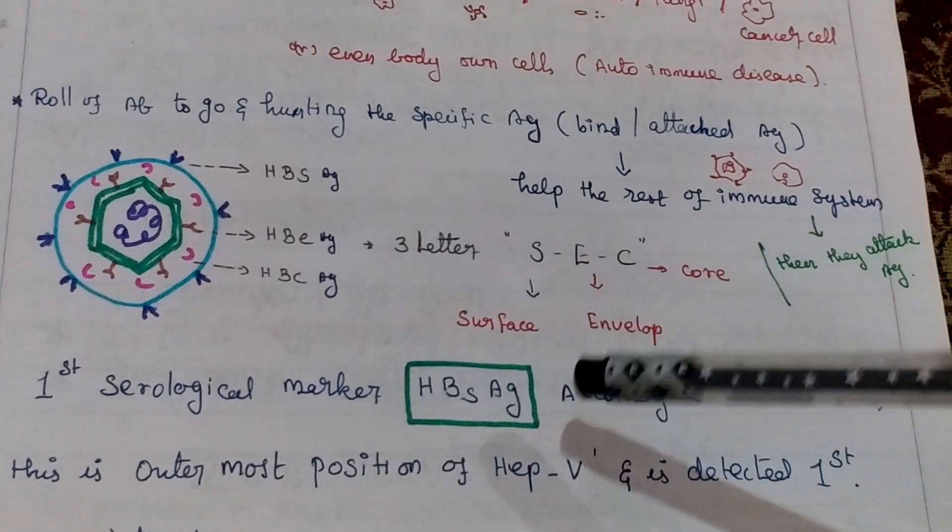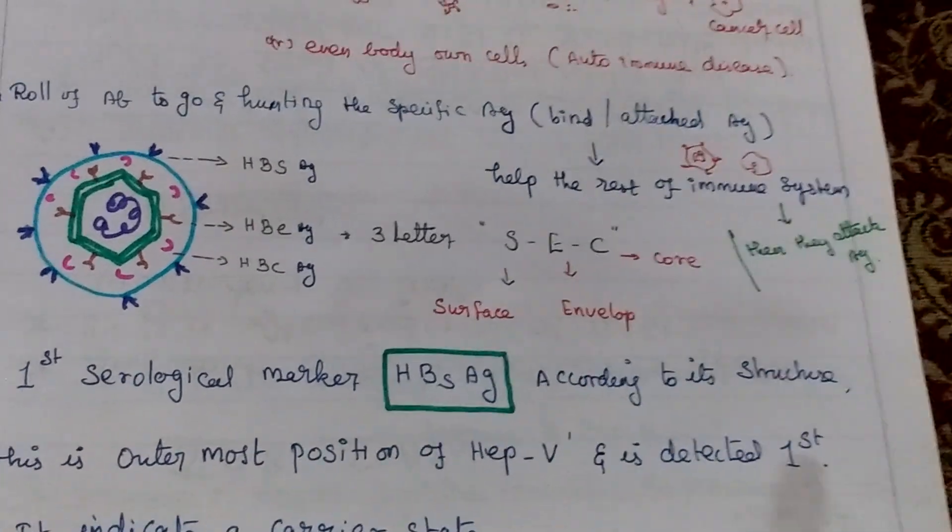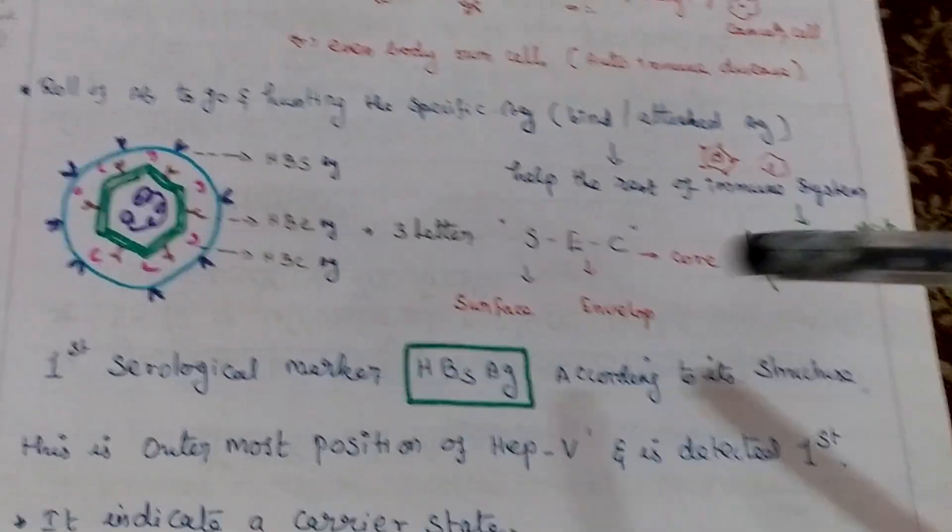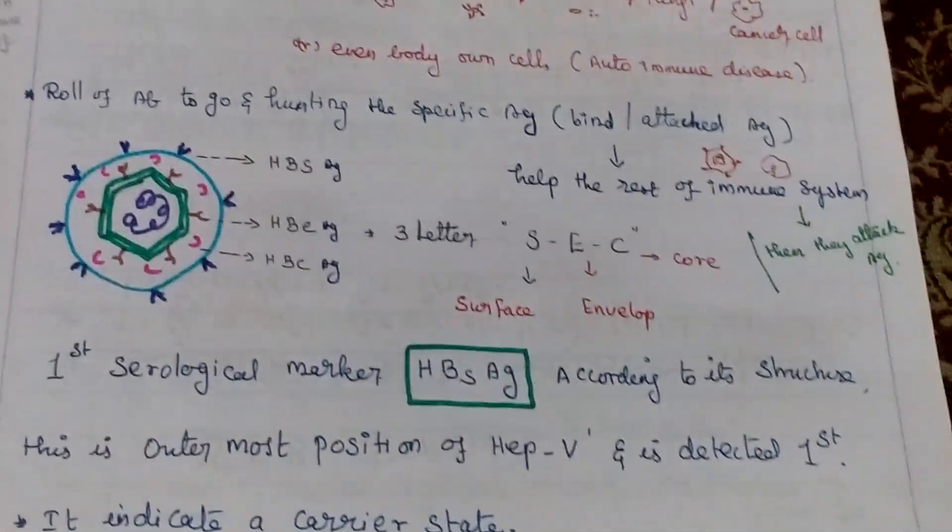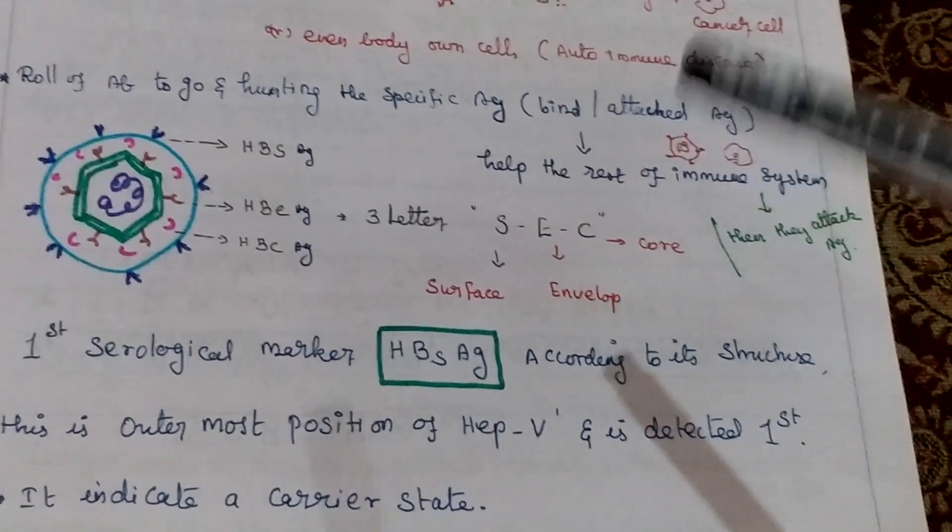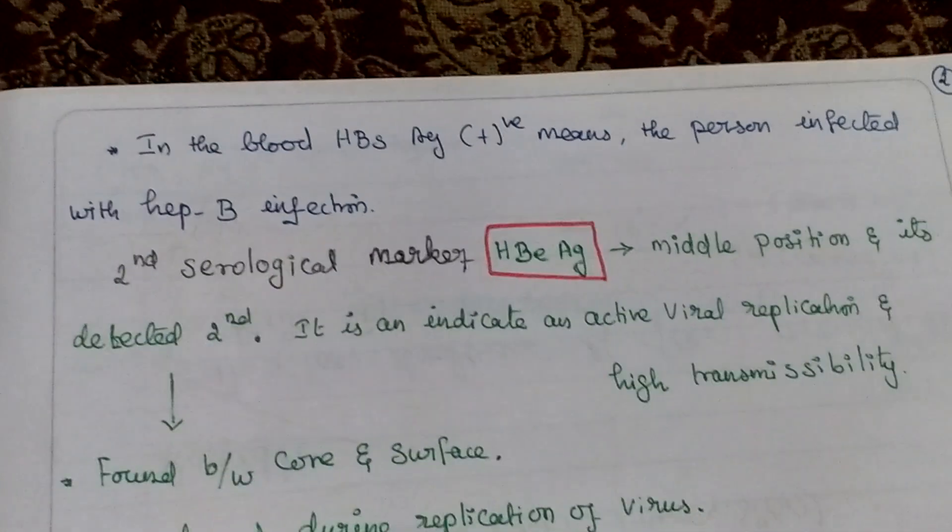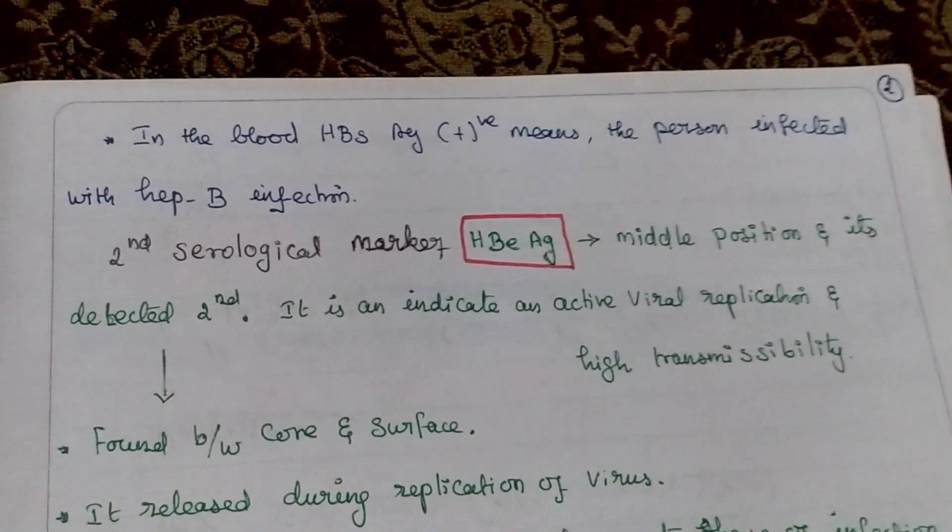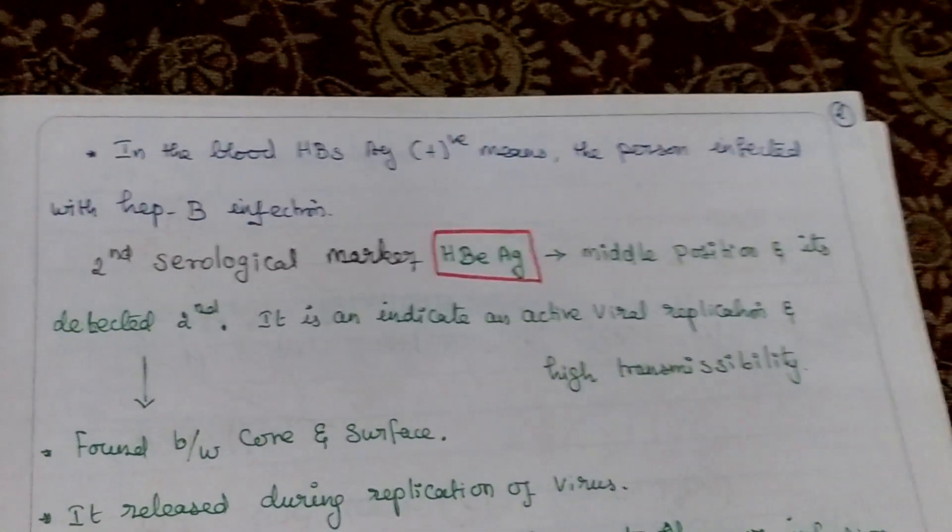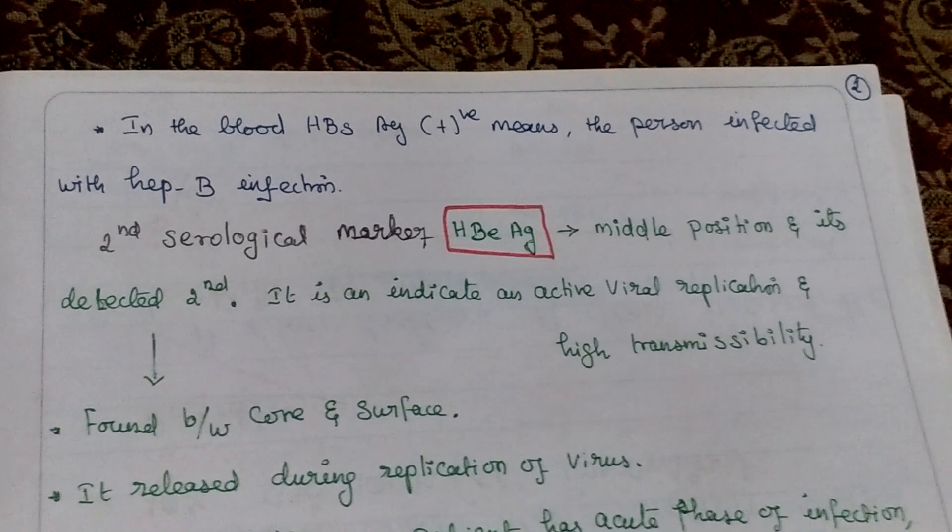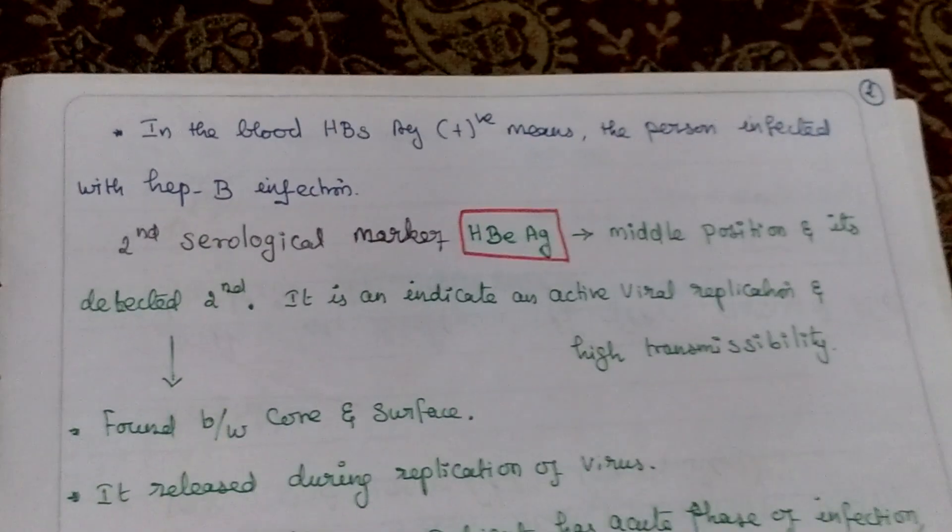First serological marker is HBsAg. According to its structure, it is in the outermost position of Hepatitis B virus, so we detect it first. It indicates a carrier state. HBsAg positive in blood means the person is infected with Hepatitis B infection.